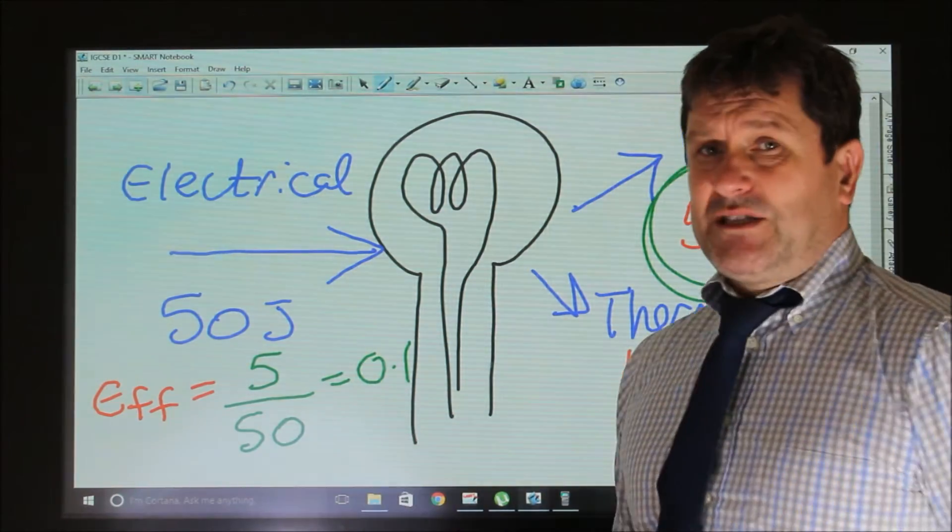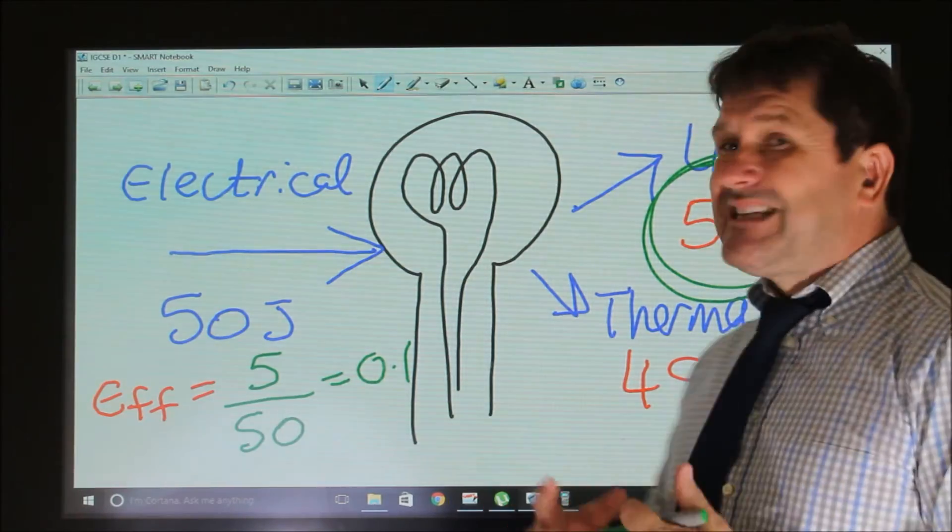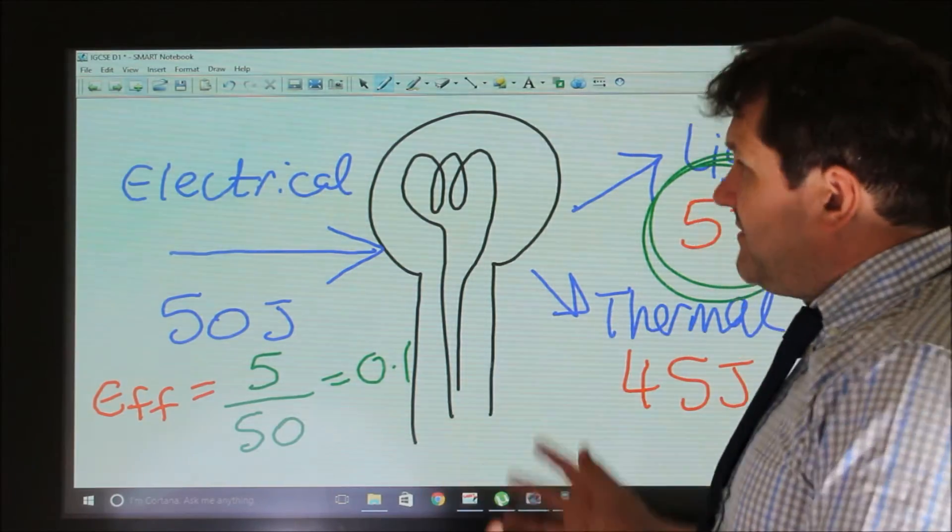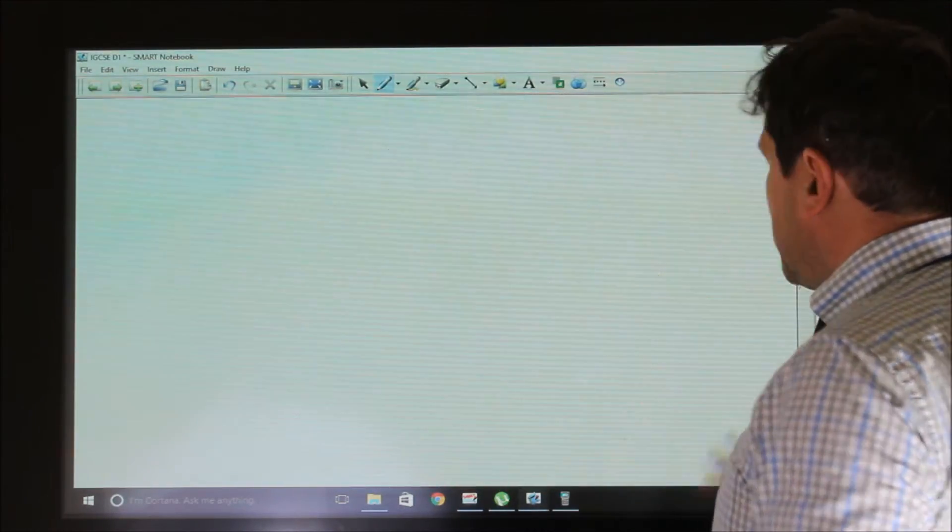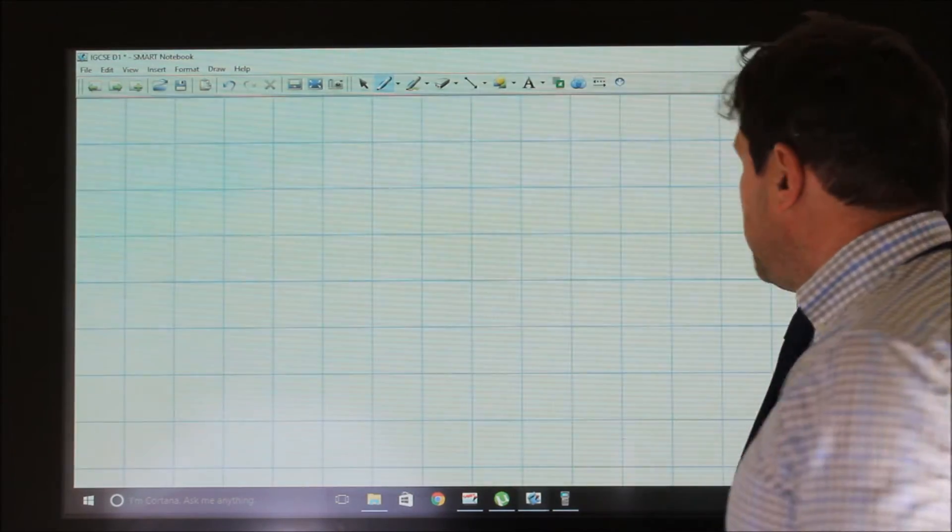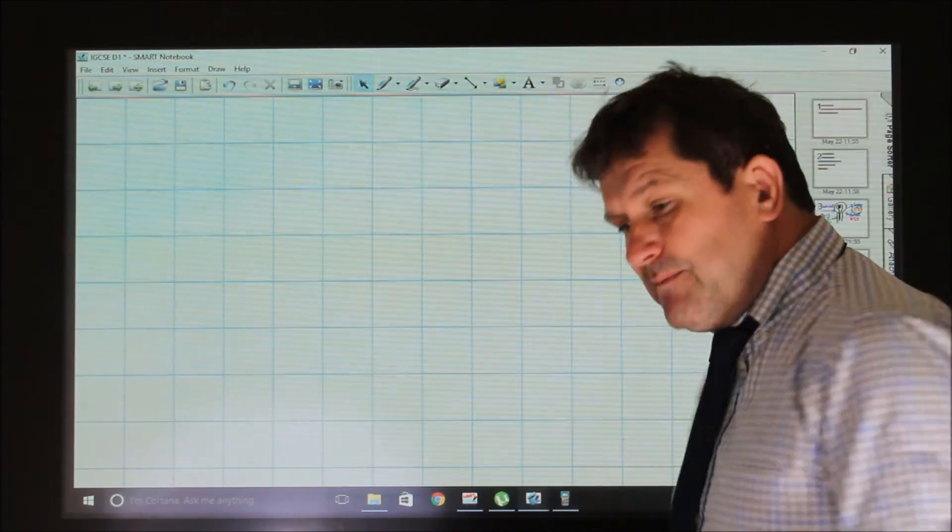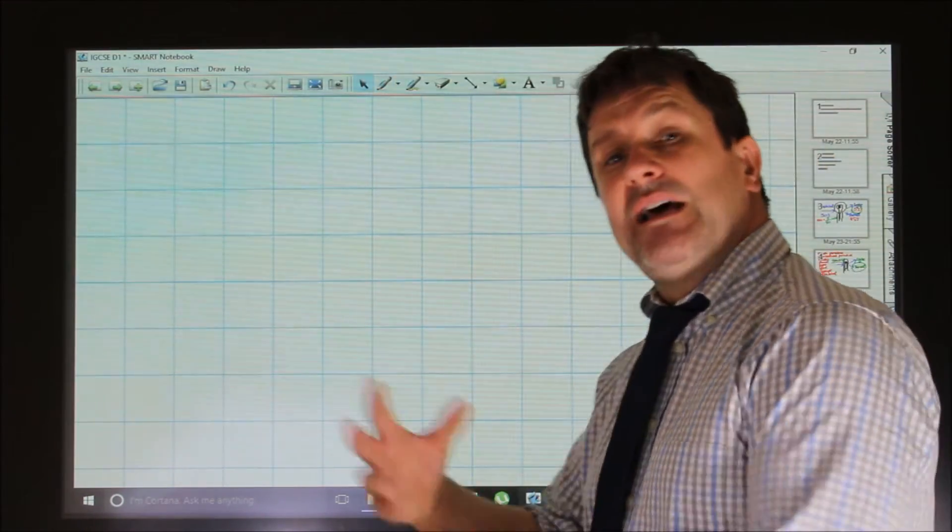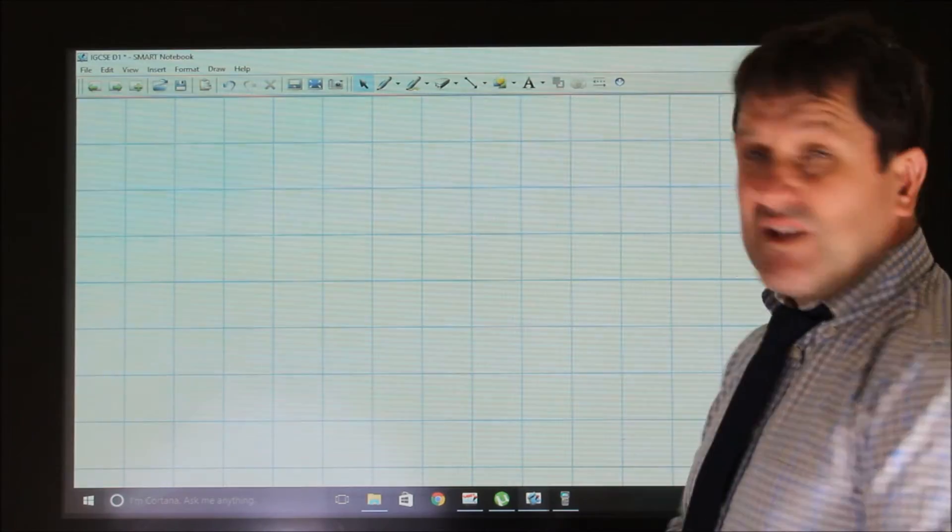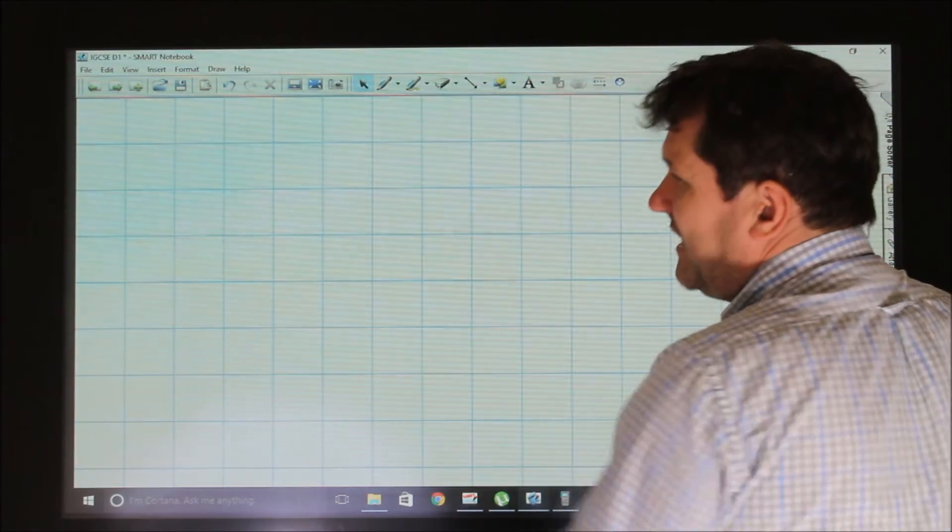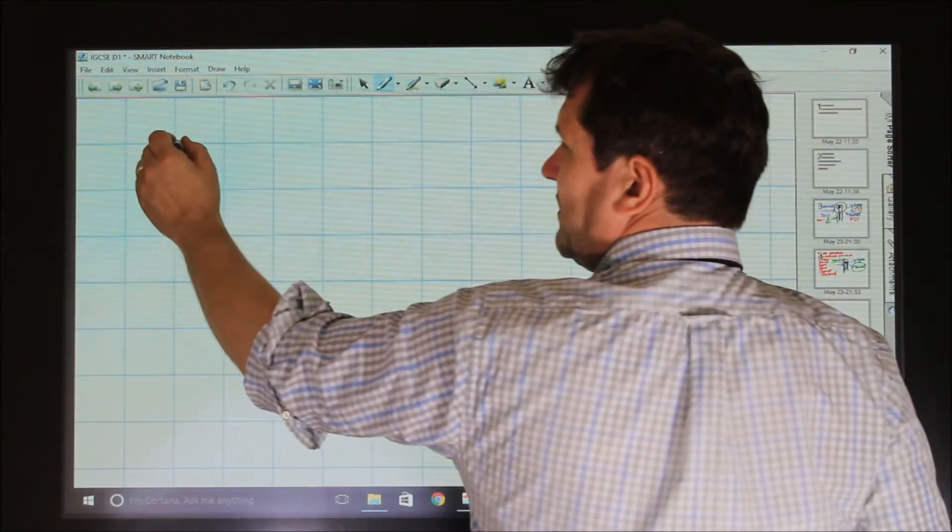Now, you could also be asked to construct what's called a Sankey diagram to illustrate this information. So if we took, I'll take the same example of the light bulb, and if we think about it graphically. So we said the light bulb had 50 joules going in, and only 5 of those were useful as light. So if you were given a graph like this, you'd have to think, well,